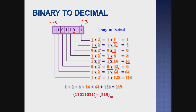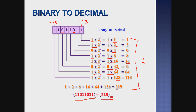1 into 2 power 6 — 1 into 64 is 64. Then last: 1 into 2 power 7, which is equal to 128. Now I will add them all — we get 219. So the number 1 1 0 1 1 0 1 1 base 2 is equal to 219 base 10. Least significant bit starts at 2 power 0 and the power values increase.